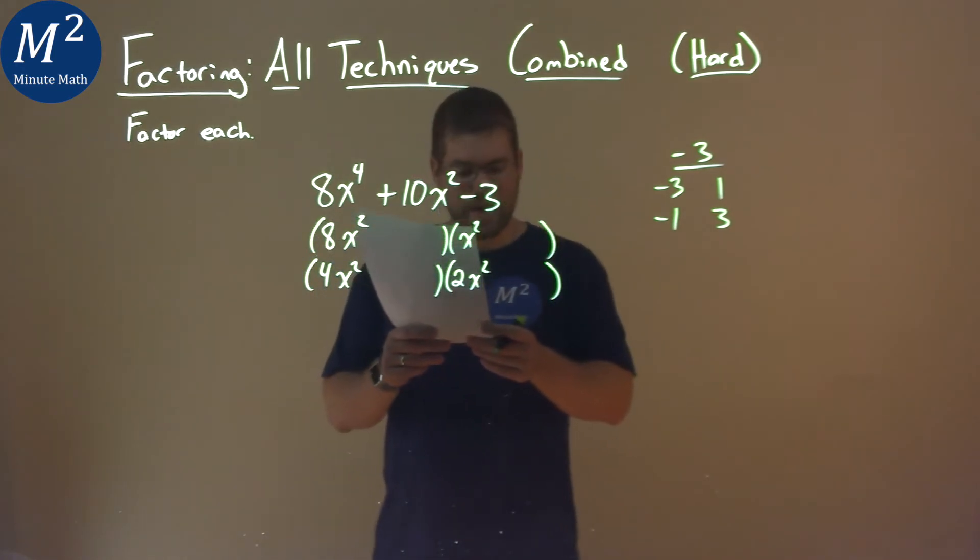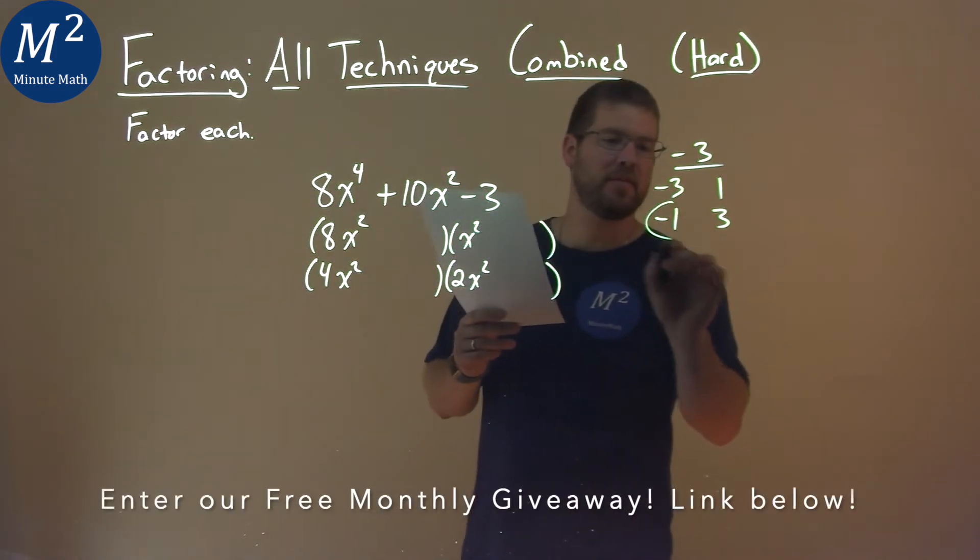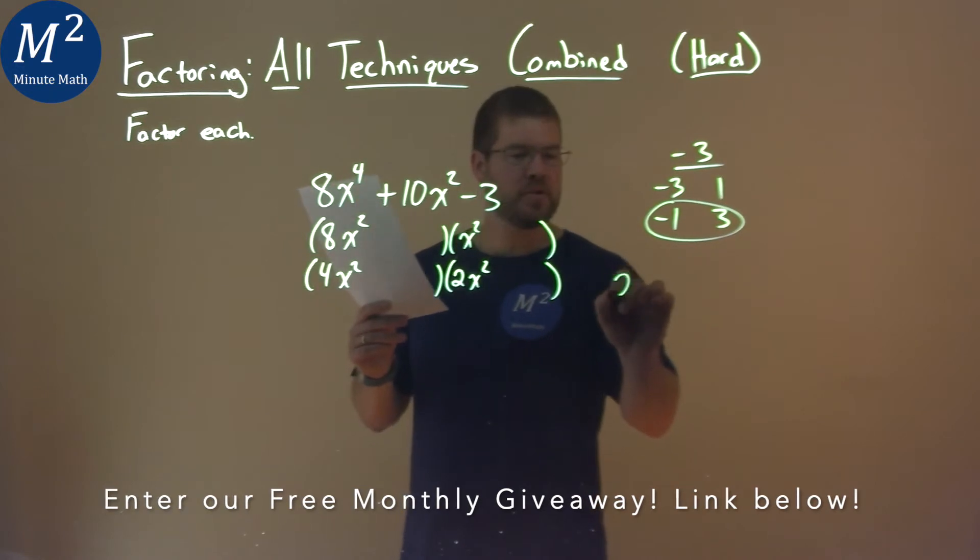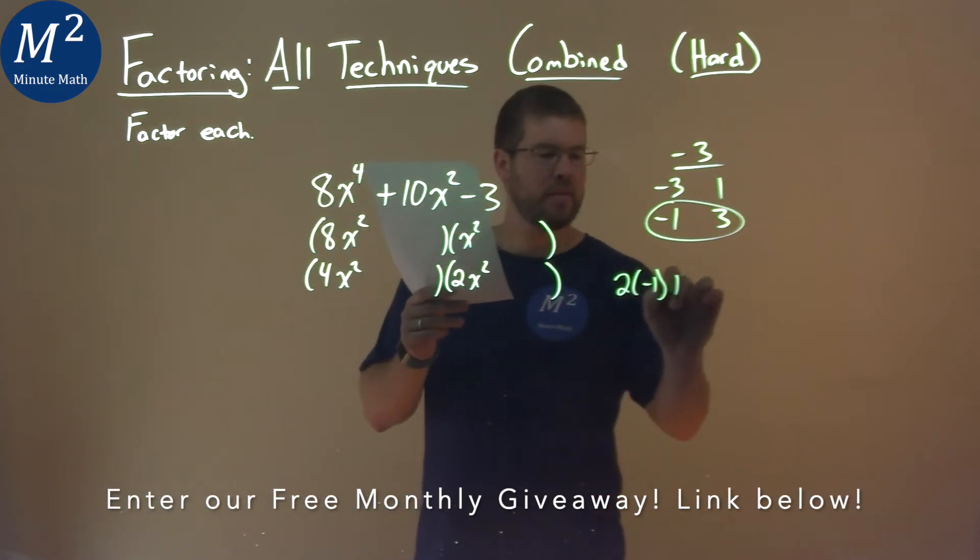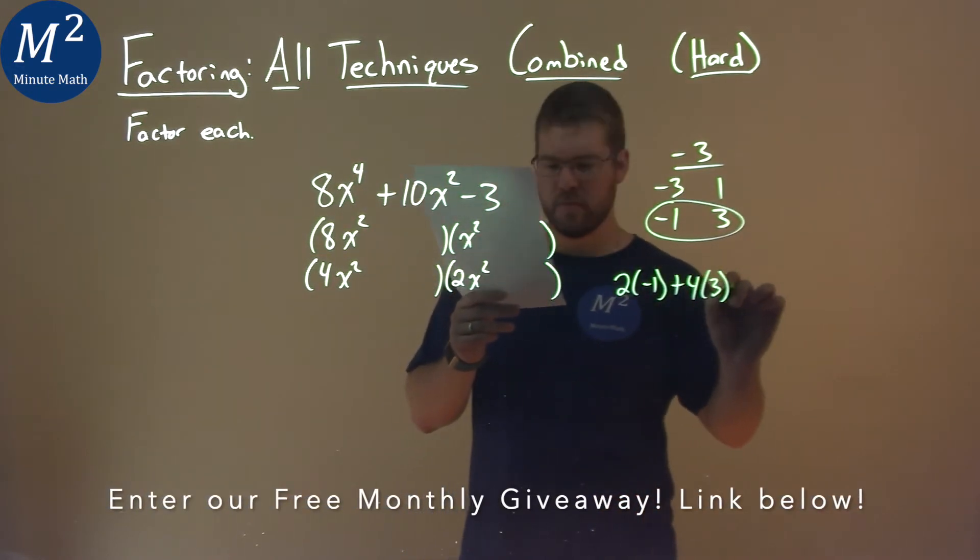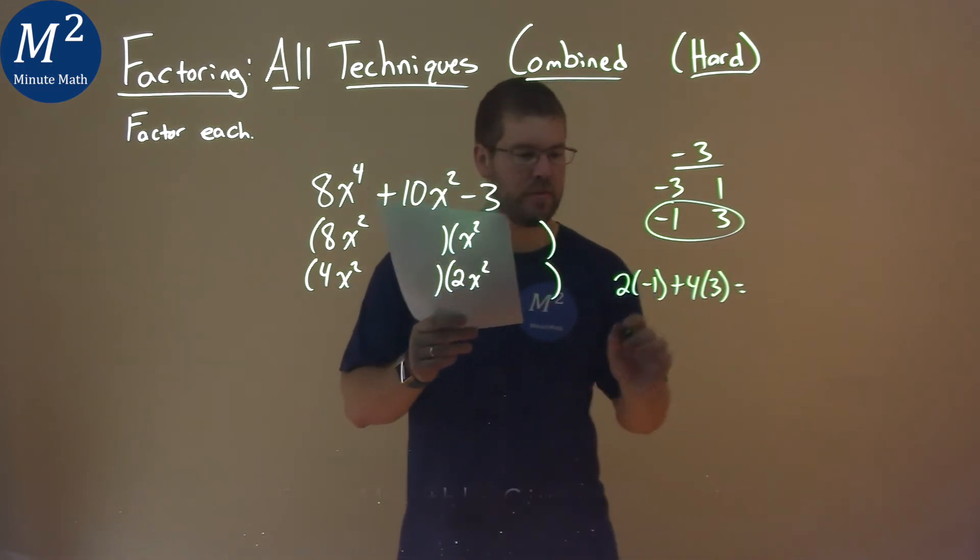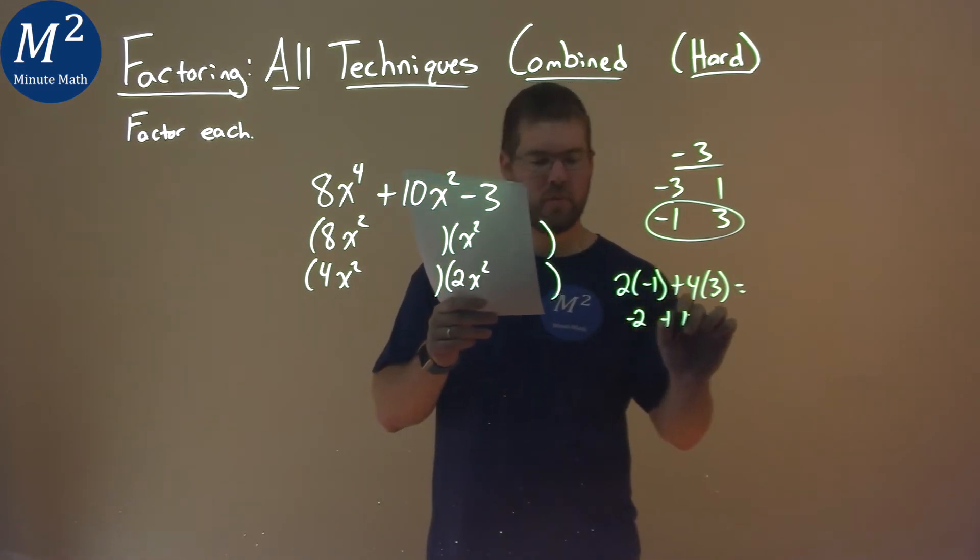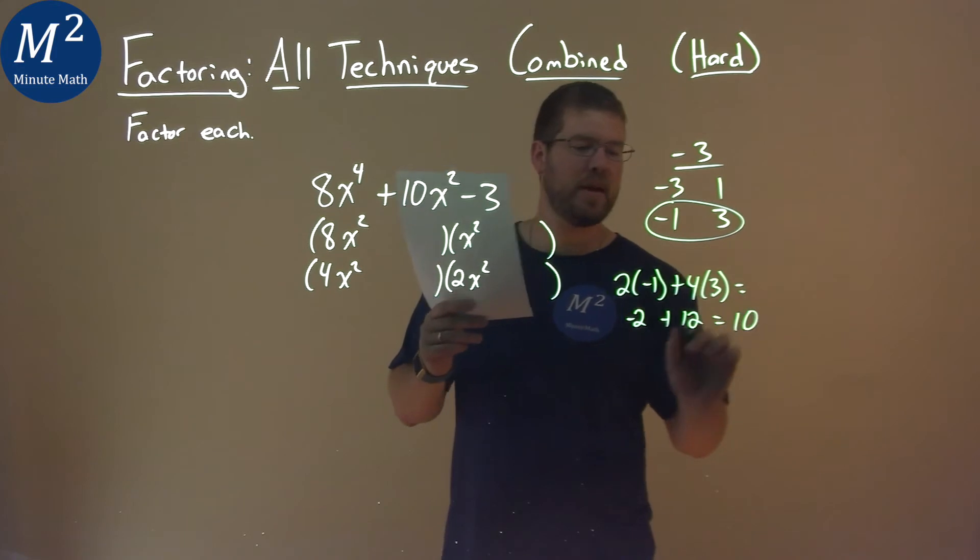The answer is going to be the negative 1 and the positive 3. 2 times negative 1 plus 4 times positive 3 equals negative 2 plus 12, which is positive 10, what we're looking for.